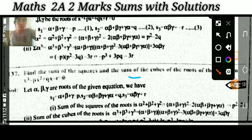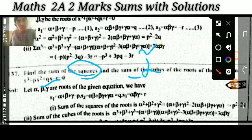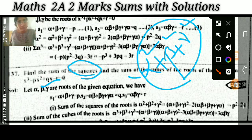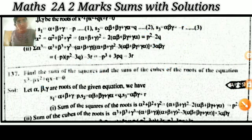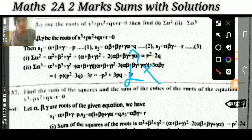For the sum of squares of the roots: since this is a cubic equation with roots alpha, beta, gamma, the sum of squares means alpha² + beta² + gamma². The sum of cubes of the roots means alpha³ + beta³ + gamma³. These are the two parts of that question.